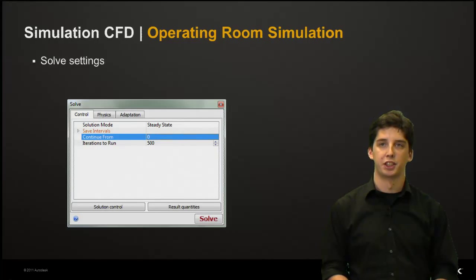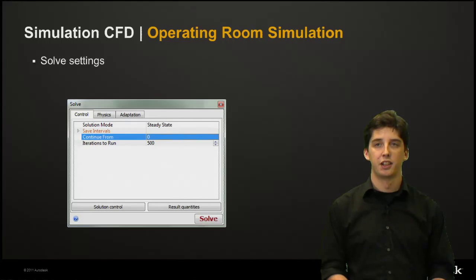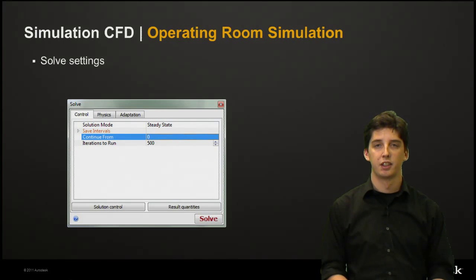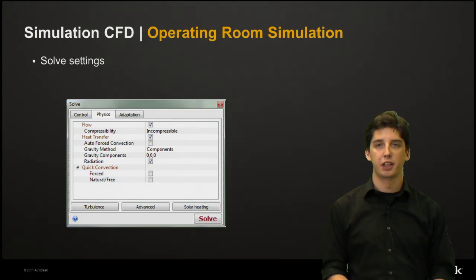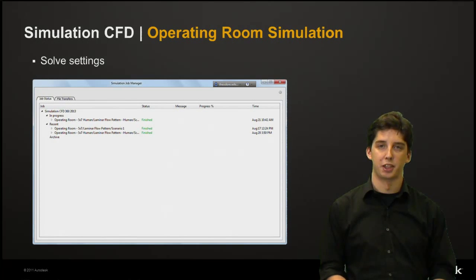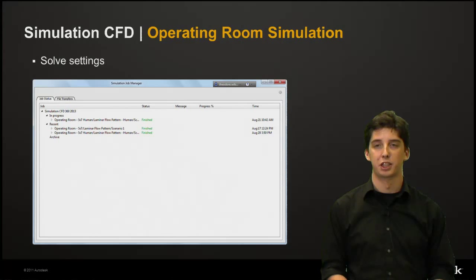Once we have adjusted our mesh we can set our solve settings. In the solve dialog box we want to run at least 500 iterations. The simulation will finish once the model converges so it will most likely be finished before 500 iterations are reached. Next we want to have heat transfer and radiation checked, then we can go ahead and click solve. Running this model in the cloud, so in the system task tray there's a simulation job manager that provides information such as uploads, downloads, and progress percentage. However, this can also be run on the desktop client and all the same settings will apply.